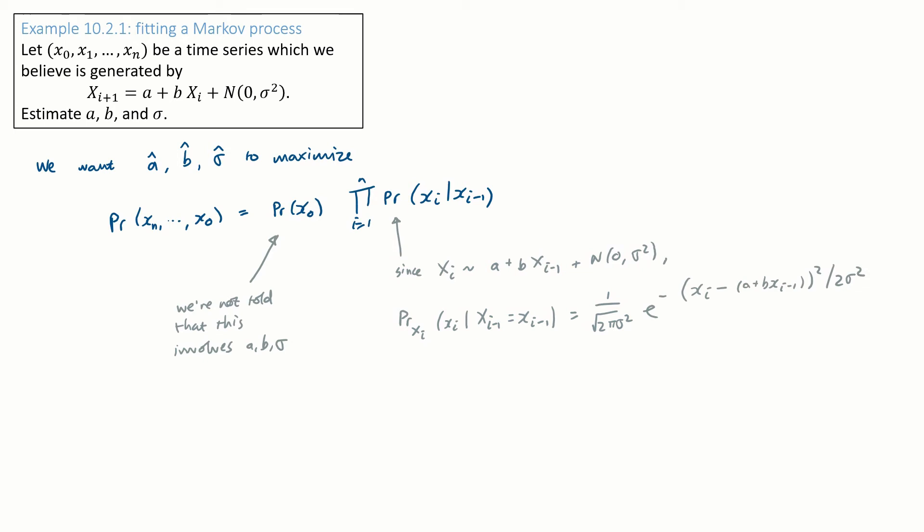Now, the question tells us explicitly what these likelihoods are. It tells us exactly the distribution of xi given xi minus 1. So we can just write out those likelihoods and maximise the whole thing. We've done this sort of maximisation many times already.